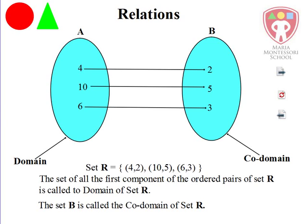We're learning two new names. The first component of the ordered pairs is called the domain, and the second component of the ordered pairs is called the co-domain. So set A is the domain, and set B is the co-domain.